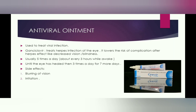With ganciclovir treatment, the patient should experience a lower risk of complications such as decreased vision or blindness. It is usually used five times a day, about every three hours while awake, until the eye has healed, then three times a day for seven or more days. Ganciclovir is also used after healing to ensure complete recovery. Side effects for antiviral ointments include blurring of vision and irritation.